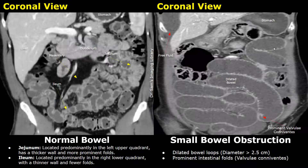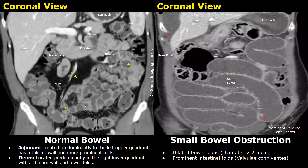A coronal plane is very helpful in studying the small bowel. The jejunum is located in the left upper quadrant; it has a thicker wall and more prominent folds. The ileum is seen in the right lower quadrant near the cecum and ascending colon. The jejunum has thicker walls so it appears slightly brighter than ileum, and the number of jejunal folds are greater than the folds seen in the ileum.